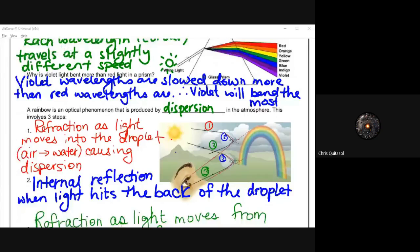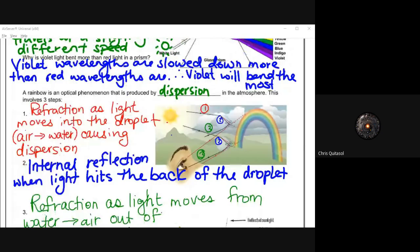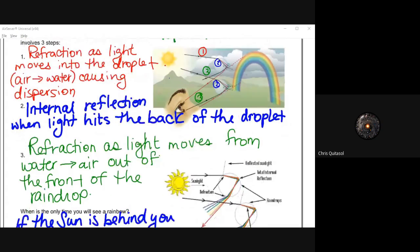With regards to refraction, the light moves into the water droplet from air into water causing dispersion. We then have that total internal reflection when light hits the back of the droplet, because it's at that critical angle. And then that refraction as the light moves from the water out to the air after being totally internally reflected. And then it forms that prism structure as a result of moving out of that raindrop from water to air.